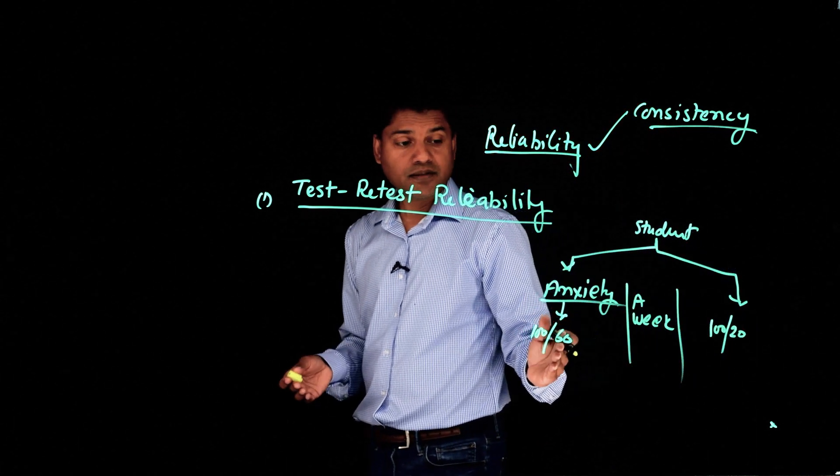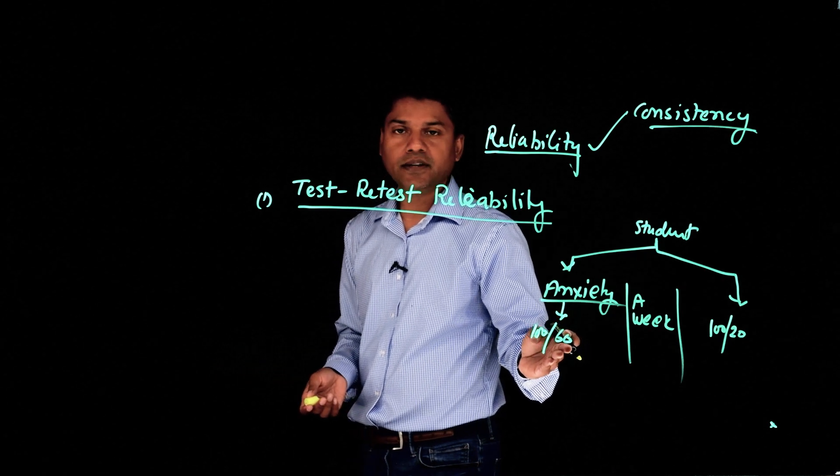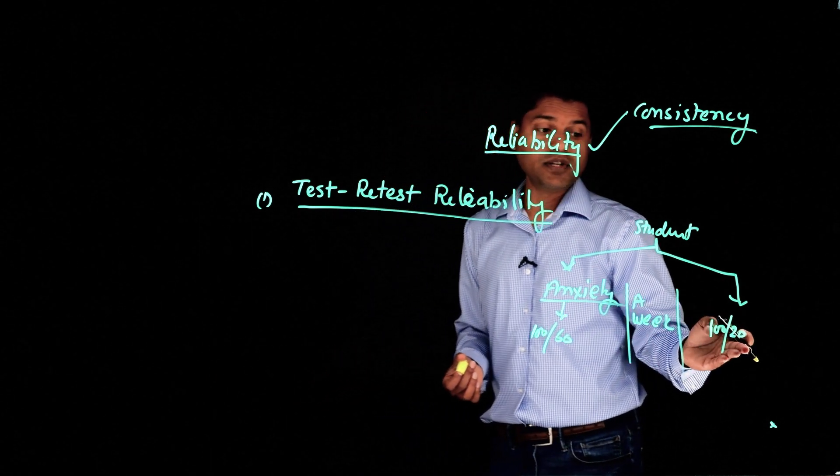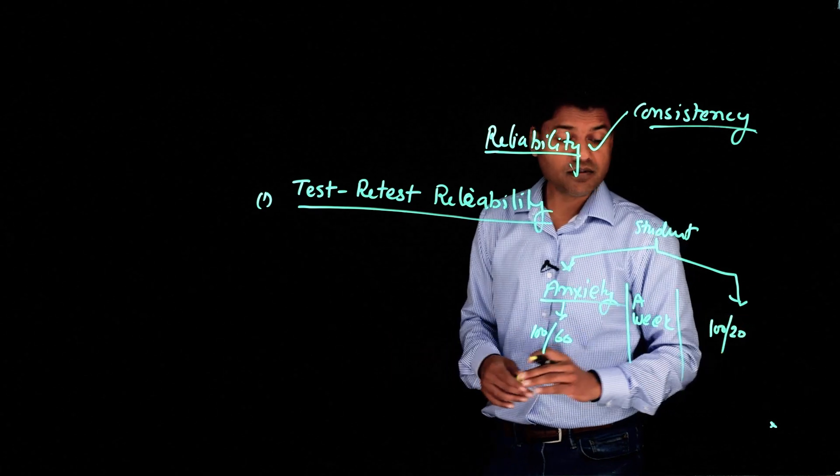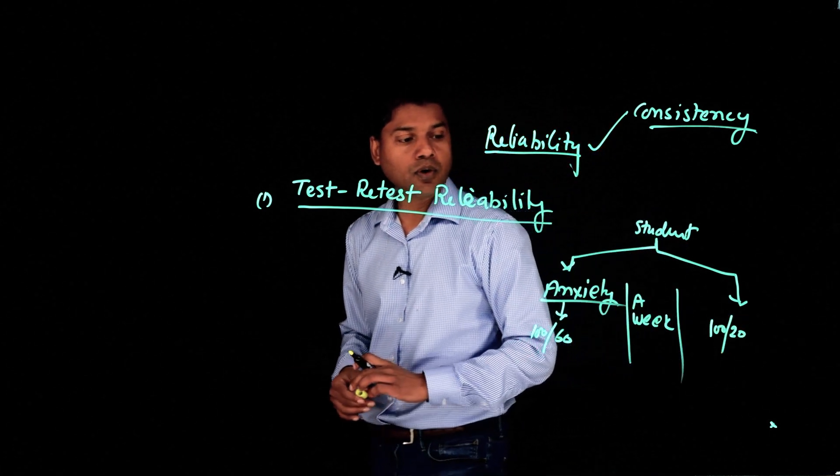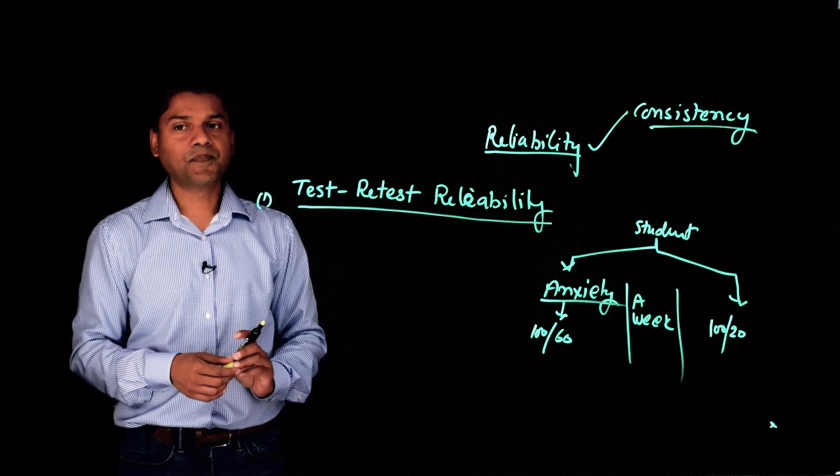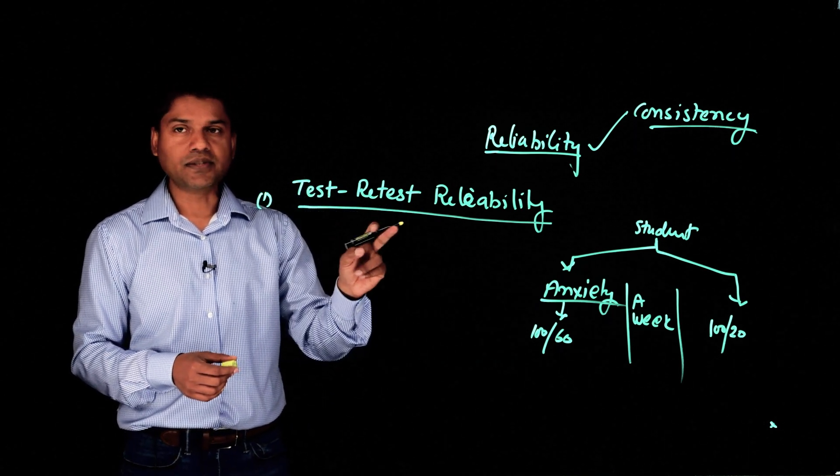Now, a week before, same test, same student, 60 out of 100. A week later, 20 out of 100. No intervention, same student, just a gap of a week. Now, do you think this test is reliable? Do you think this test is consistent?